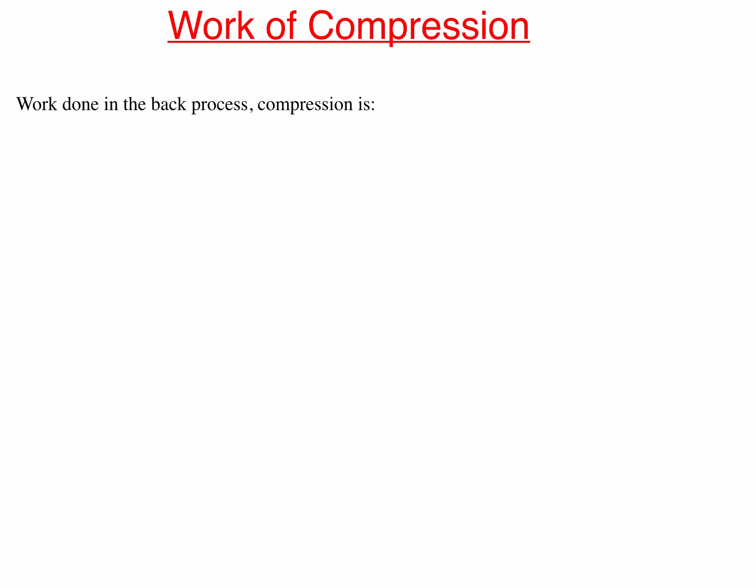In this episode, we will talk about the work of compression by a gas sample. When work is done on the system by compressing the gas sample, net amount of work flows from the surroundings into the system. The work of compression is calculated exactly the same way as we would calculate the work of expansion, except the opposing pressure is in the opposite direction. The work done in a compression process is equal to minus P opposing times the final volume minus the initial volume in a one-step compression process.